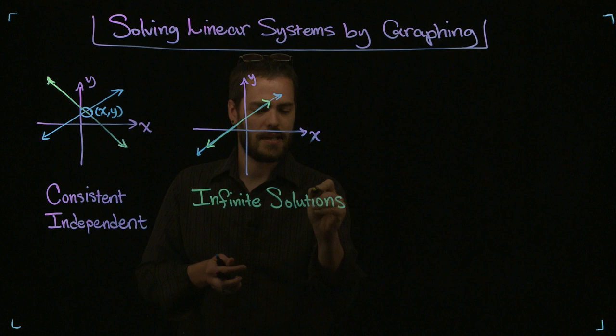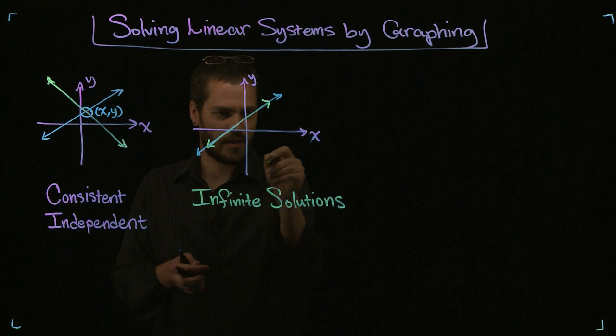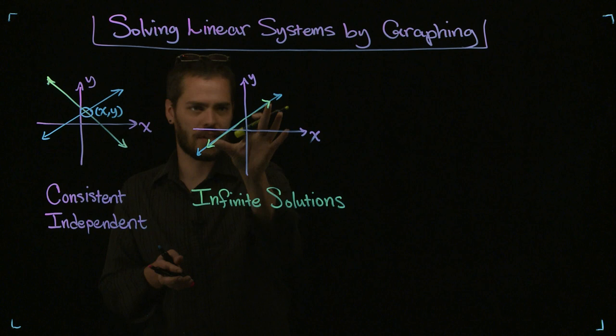I do need to add something to this because there are also an infinite number of points on the graph that are not solutions. Any point out here that's not on one of those lines, any point out here, those are not solutions, and there are an infinite number of them. So, which infinite solutions is important to address?